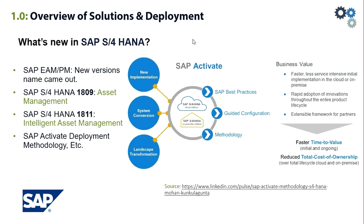SAP Activate comprises the following features: we have the SAP S4 HANA cloud edition and the SAP S4 HANA on-premise edition. In terms of business value, it became faster, less service intensive for initial implementation in the cloud or on-premise, with rapid adoption of innovations throughout the entire product lifecycle, and an extensible framework for partners.